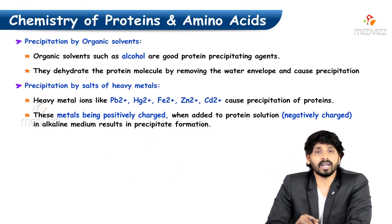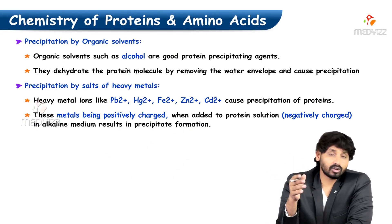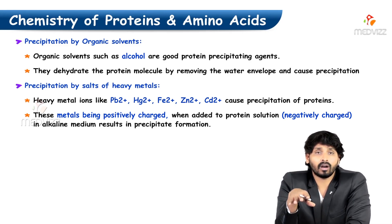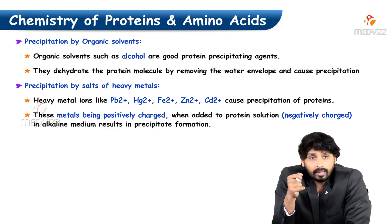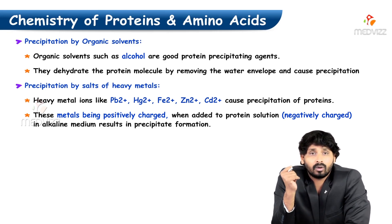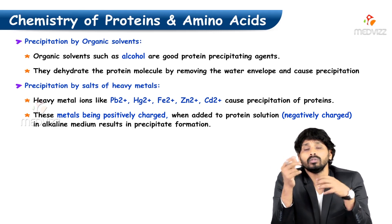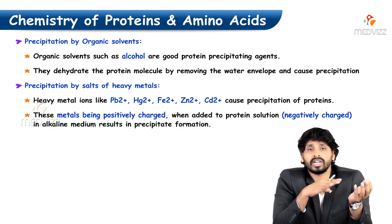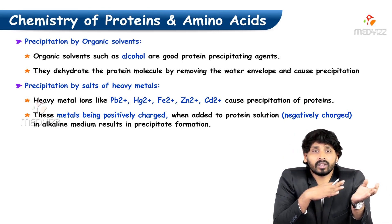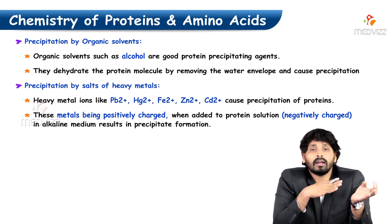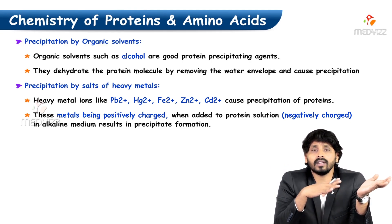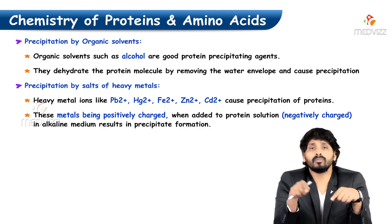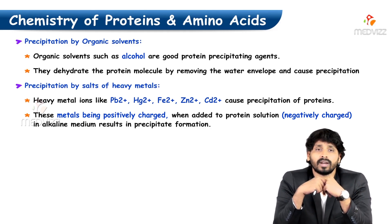Precipitation by organic solvents: organic solvents such as alcohols are good at precipitating proteins. The principle behind this is dehydration — they remove the water molecule from the protein, breaking the shell of hydration in the same way as salts, and make them precipitate.